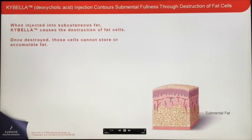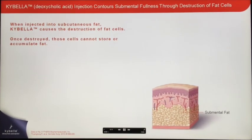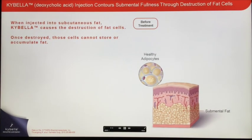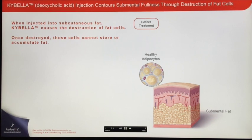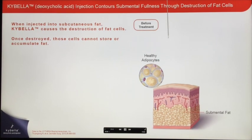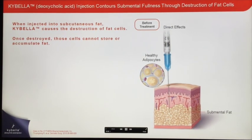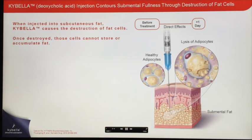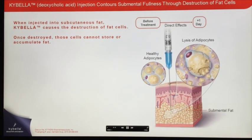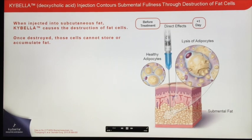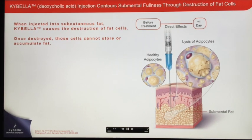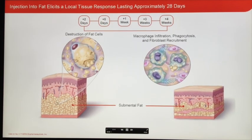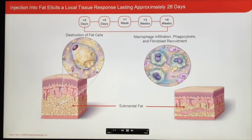Here is a graphic representation of the mechanism of action of Kybella. Before treatment, you see the healthy adipocytes represented here. Kybella is then injected into the pre-platismal subcutaneous fat layer. One day after injecting Kybella, you can see the depiction of the lysis of adipocytes through destruction of the cell membrane.